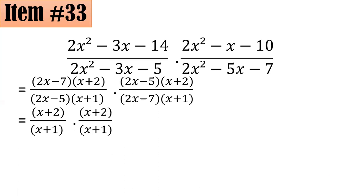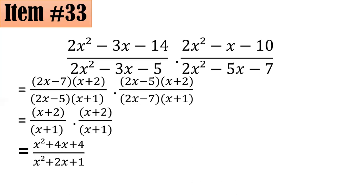Since there are no other common factors except 1, we multiply numerator by numerator and denominator by denominator, using the FOIL method. This gives x squared plus 4x plus 4, all over x squared plus 2x plus 1, and that is letter C.